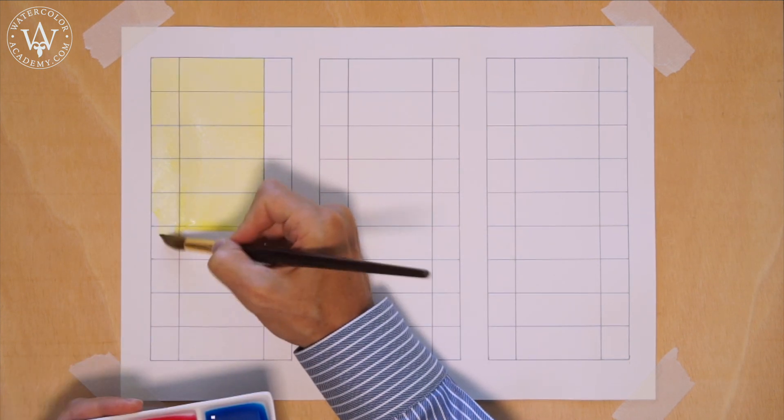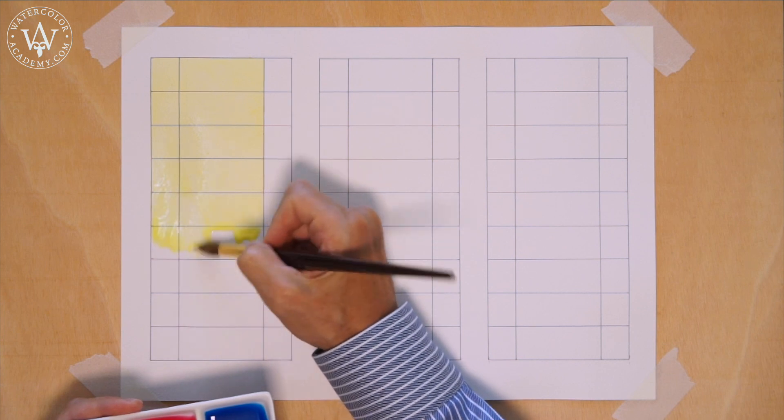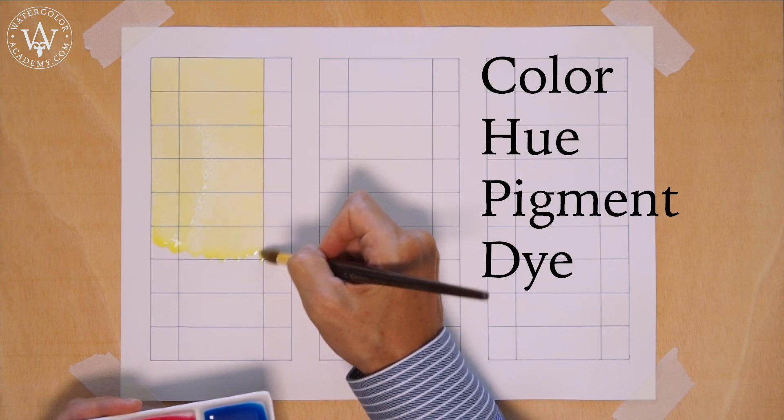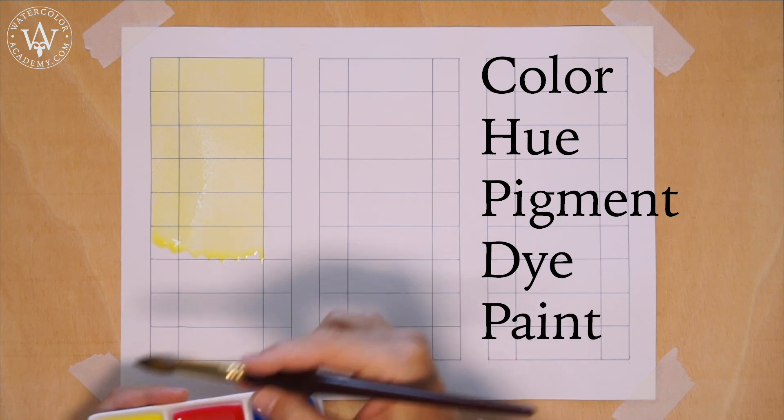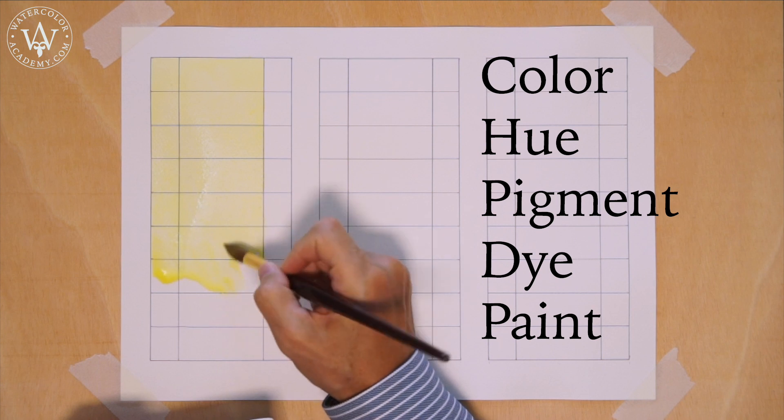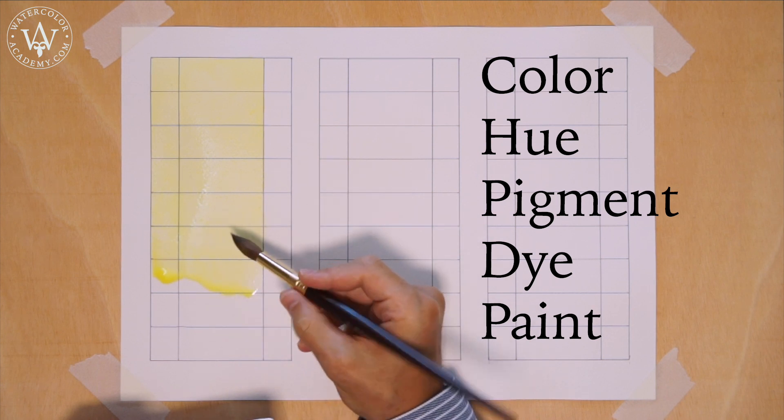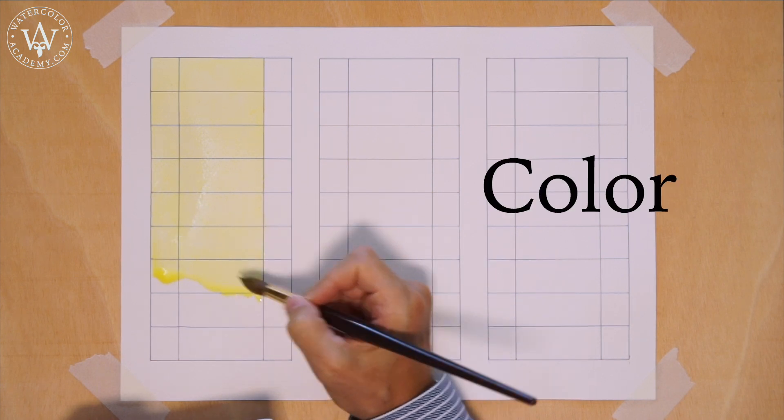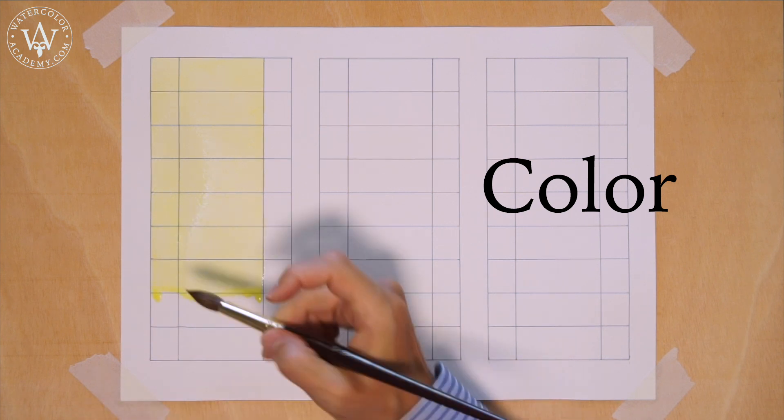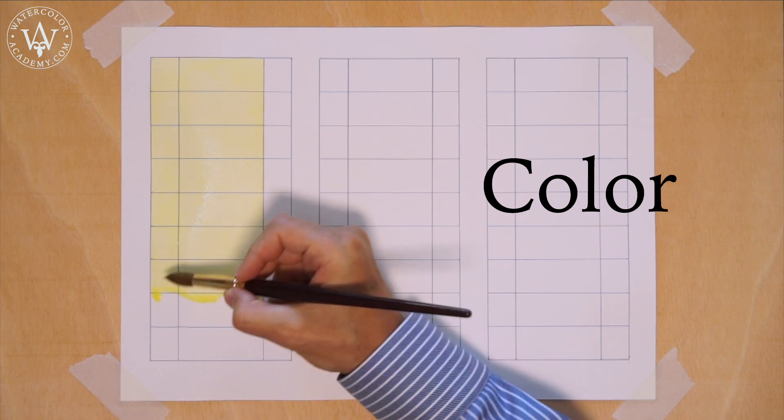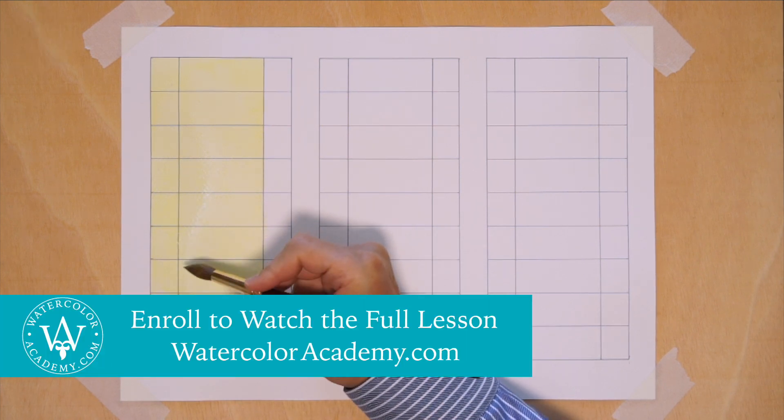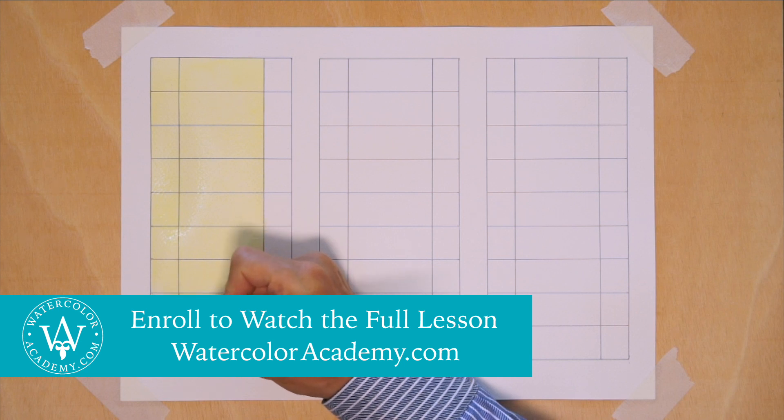When talking about colors, some artists may use words such as color, hue, pigment, dye, and paint interchangeably. To agree on the terminology, we have to define those words. Color refers to the visual sensation of how the human eye and brain conceive different wavelengths of visible light. In other words, this is what we see, which is colored light.